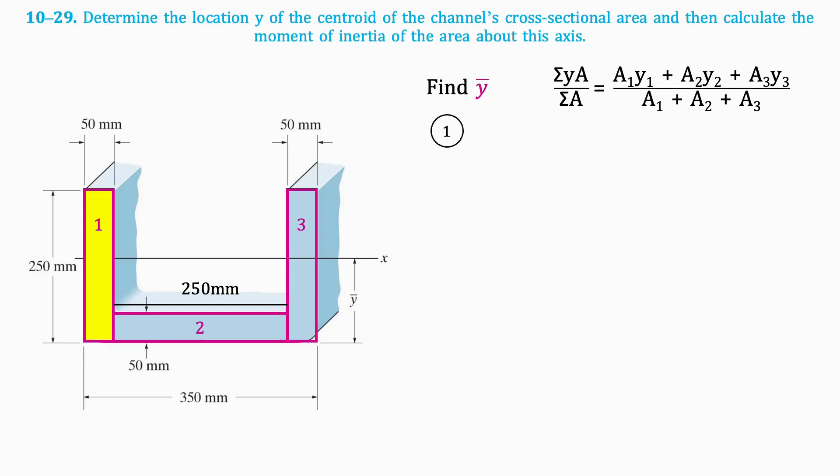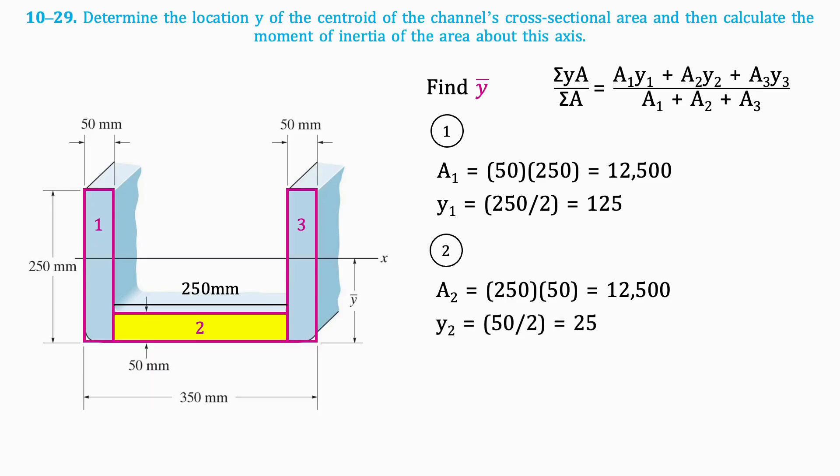The area of the first section is as follows, and the distance to the centroid is half the height, so 125. The area of the second section is the same, and the distance to the centroid is half the height, so 25 mm.